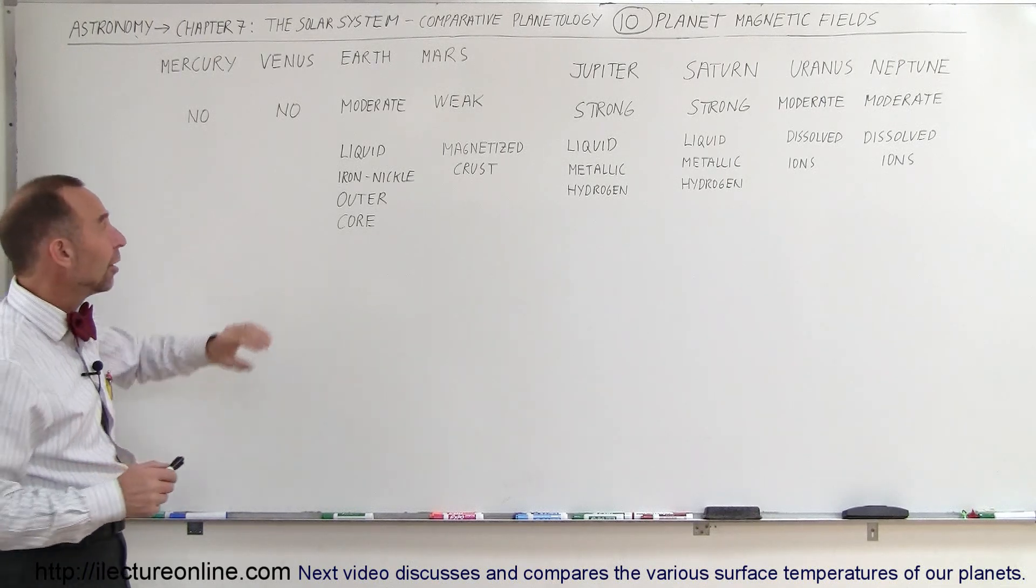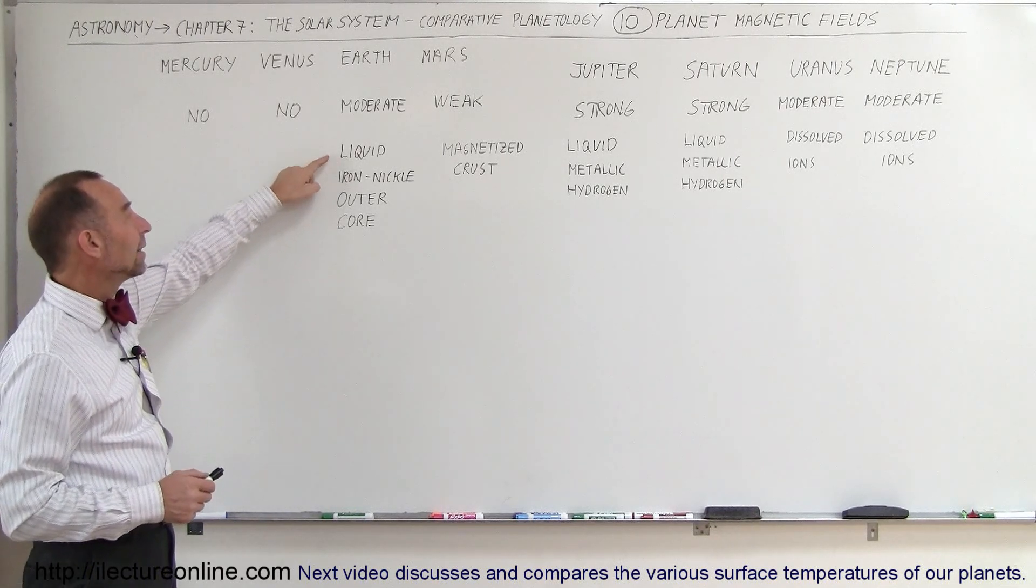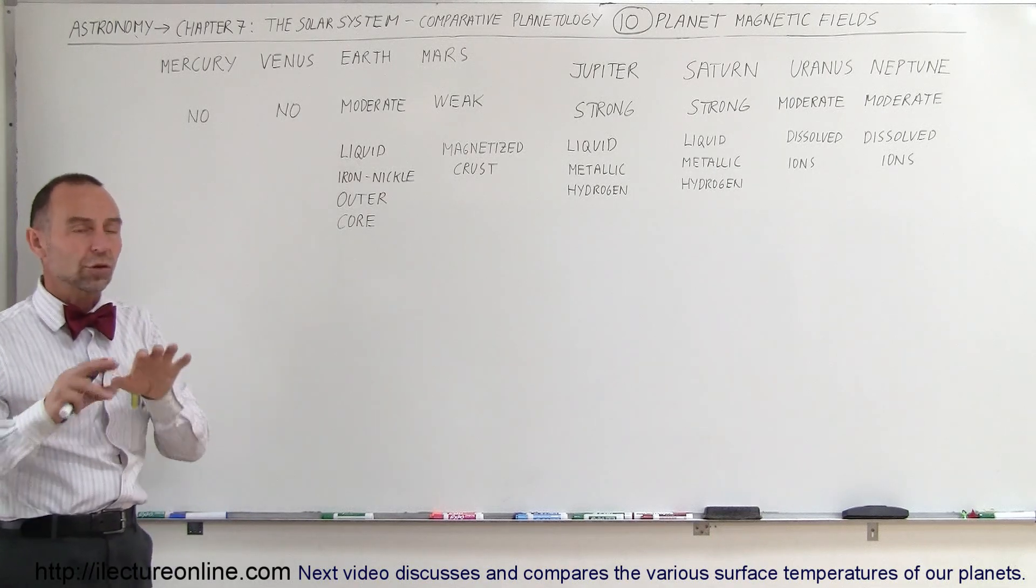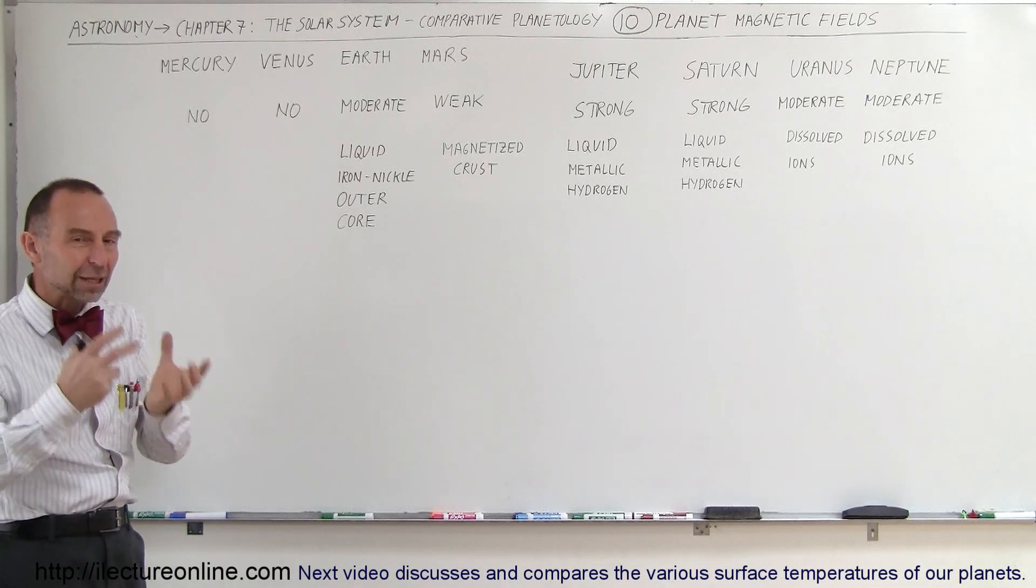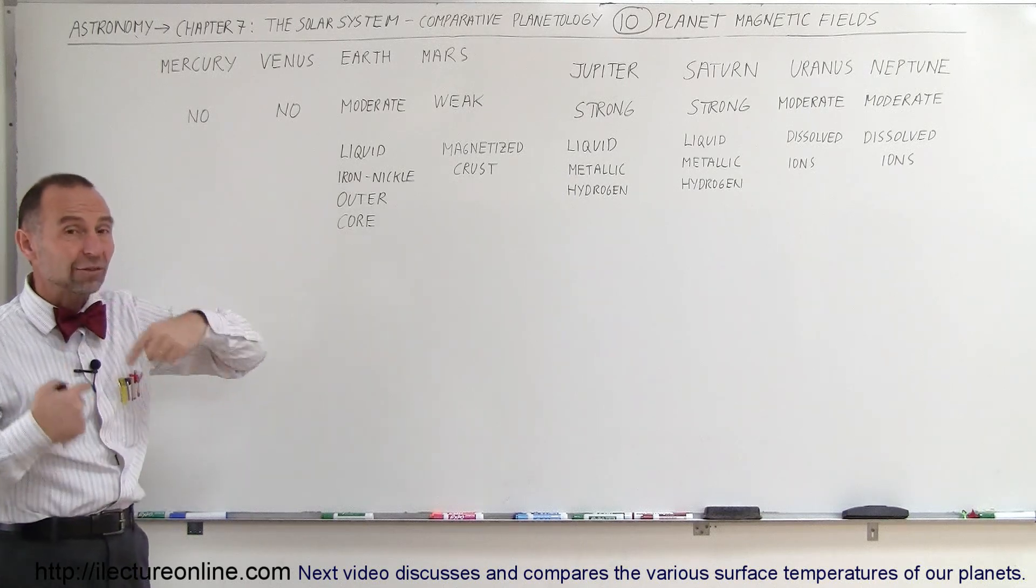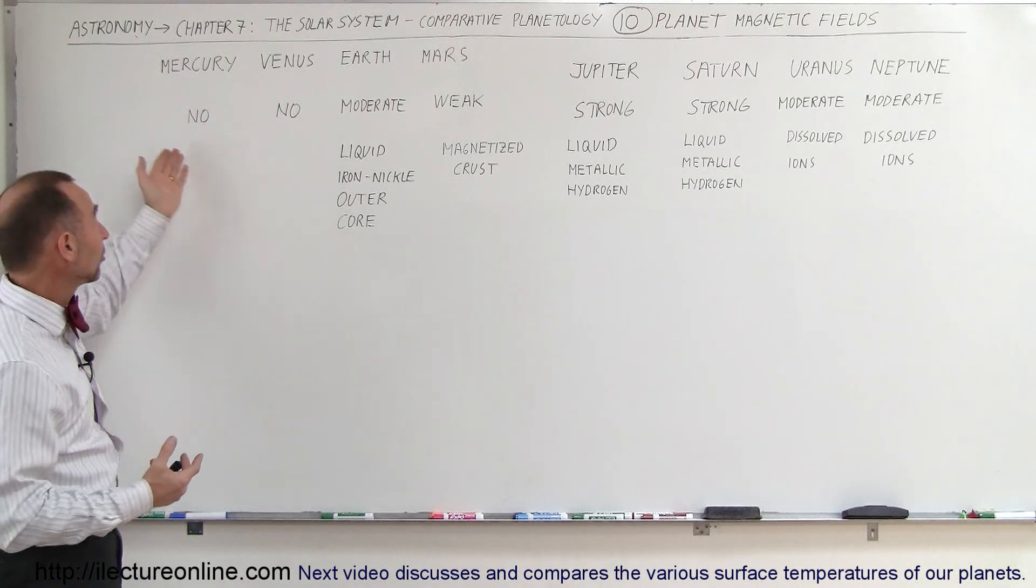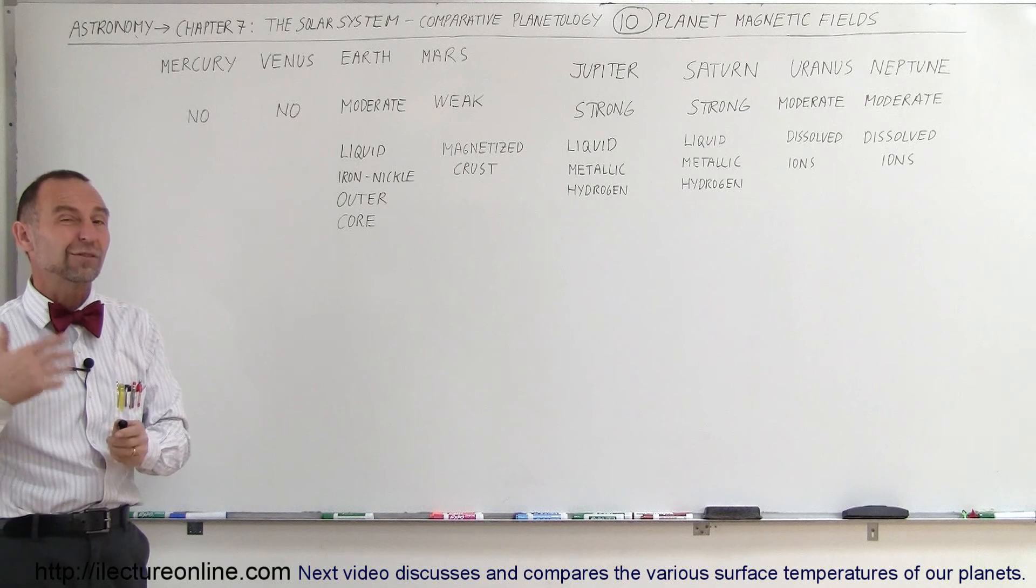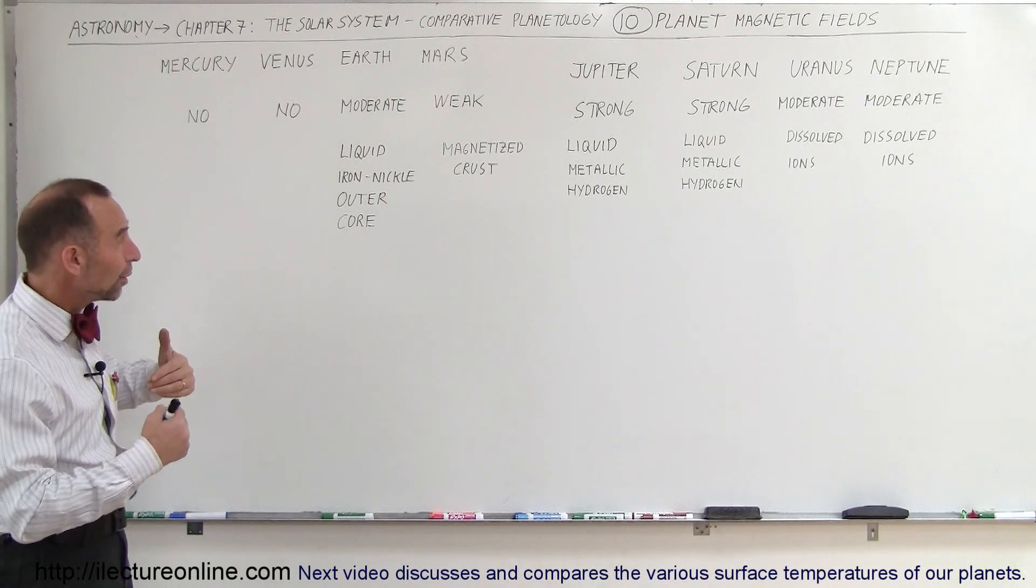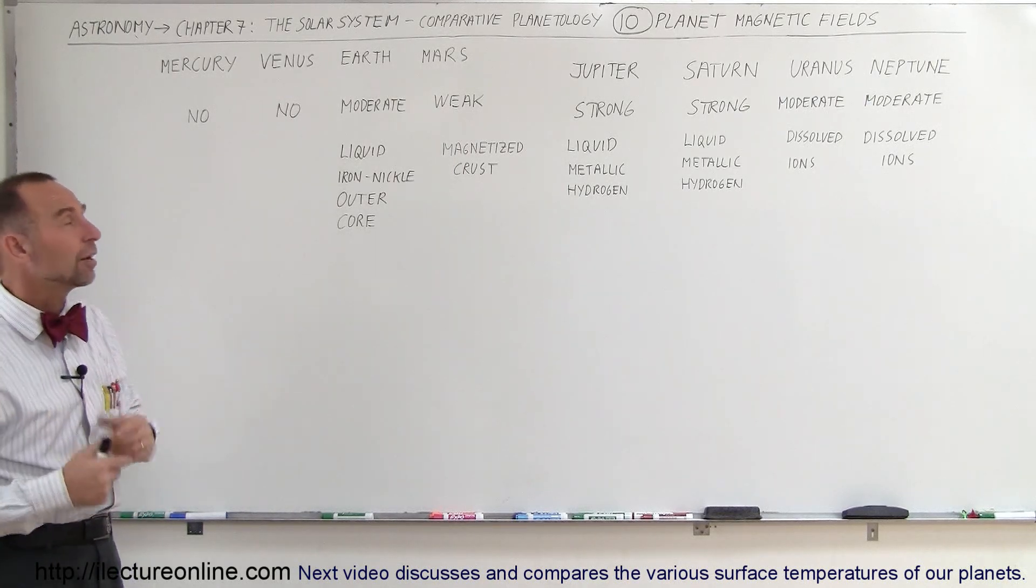Now, the Earth, we do have a portion of the core being a liquid iron-nickel core. So the outer portion of the core is actually a liquid metal core made out of iron and nickel. And Earth has a rapid rotation relative, especially compared to Mercury and Venus, once every 24 hours. So therefore, we see that there's a moderate magnetic field on the Earth.